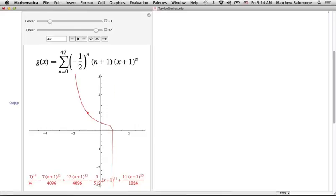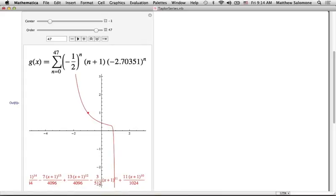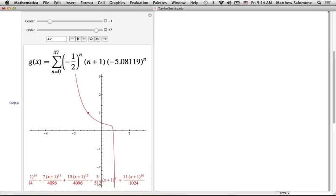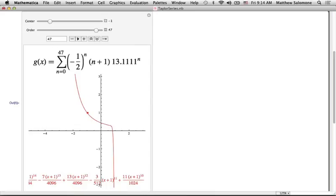This ends up wagging its tail. How far? This thing is freaking out. Not exactly sure what's going on there. But at least we can see from the graph how far up does it look like the interval of convergence goes?